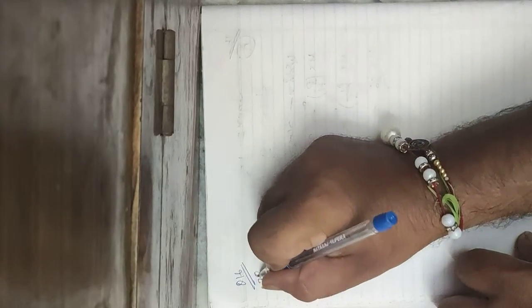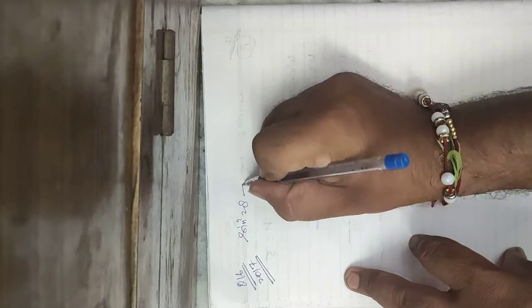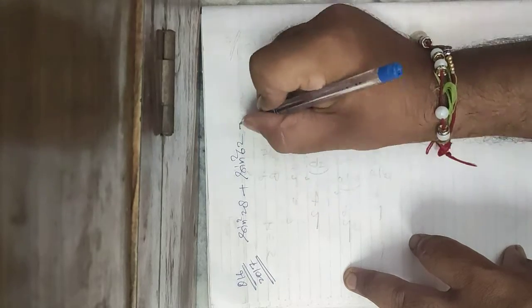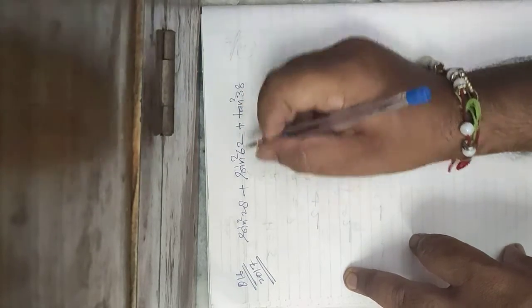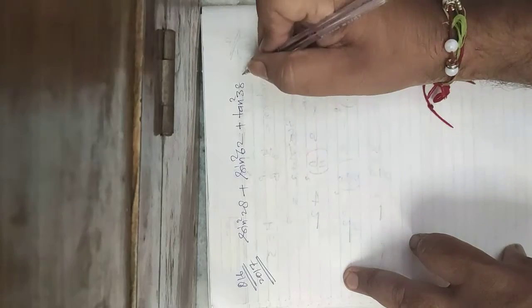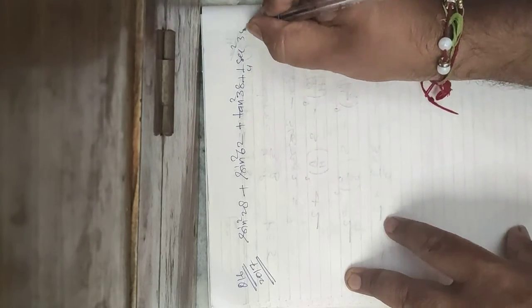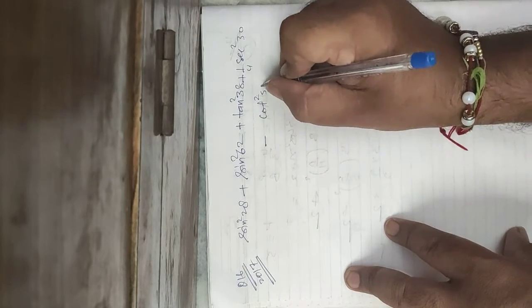This is the question of the year 2017, ICAC 2017. The question says: sin²28 + sin²62 + tan²38 + (1/4) sec²30 minus cot²52.